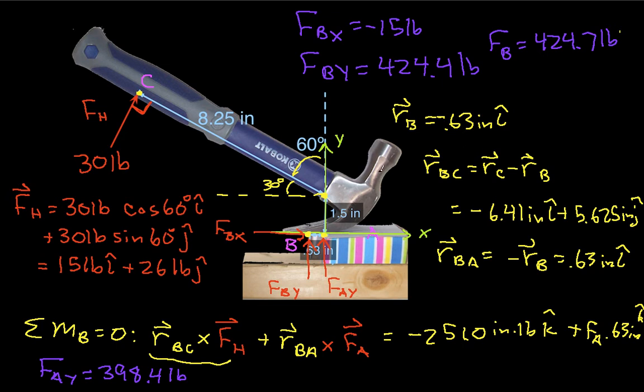And so what we've got here is we're applying 30 pounds of force, and the force that's being applied in this direction to pull the nail out is 424.7 pounds. So we've got a force that's almost 14 times larger than the force we're applying by the hammer that's being applied to the nail. So that's good news. The more force you apply, the easier it is to get the nail out. That's the good news.